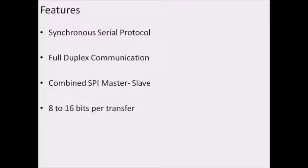Data is transmitted along with the clock signal in synchronous communication. The master or transmitter sends a start bit, then all the message bits which may include a number of characters, and later sends the stop bit. The start bit indicates the start of communication and the stop bit indicates the termination or end of communication. This is how data is transmitted in synchronous serial protocol.